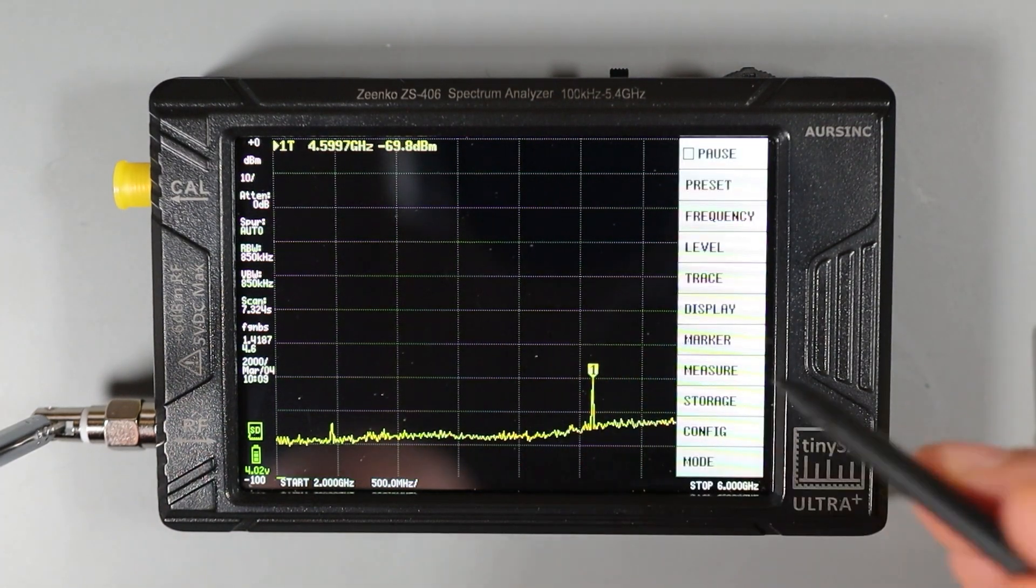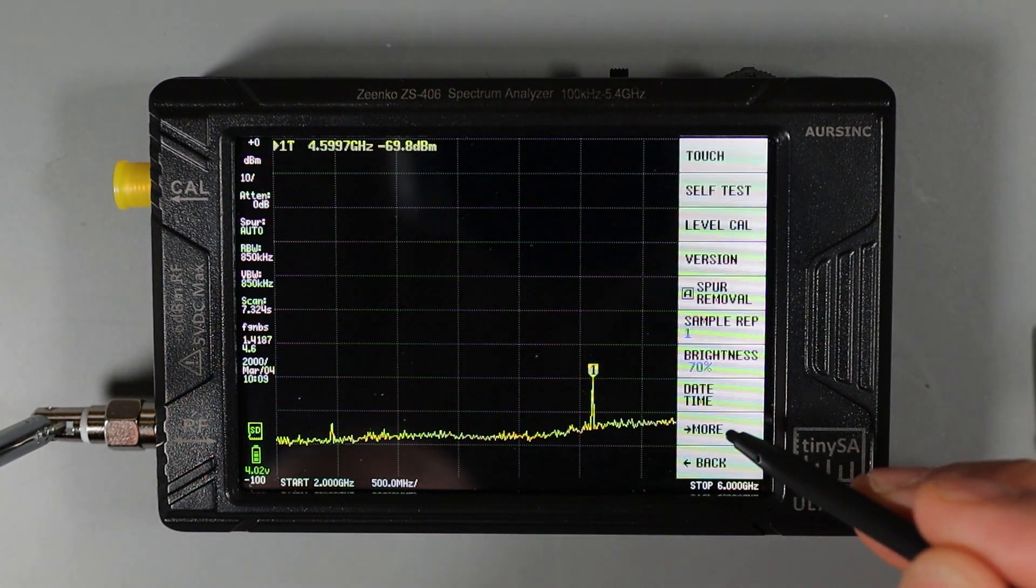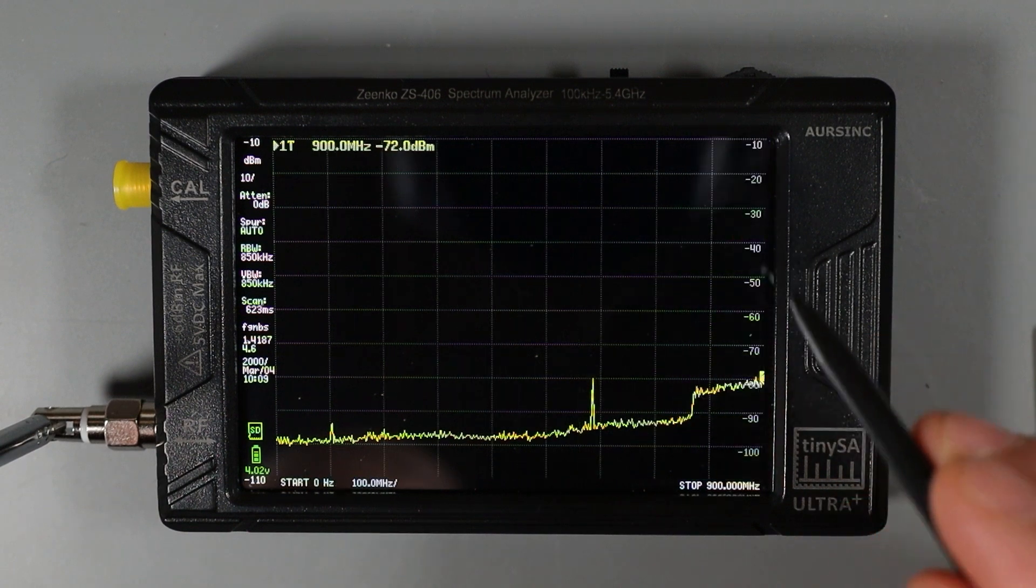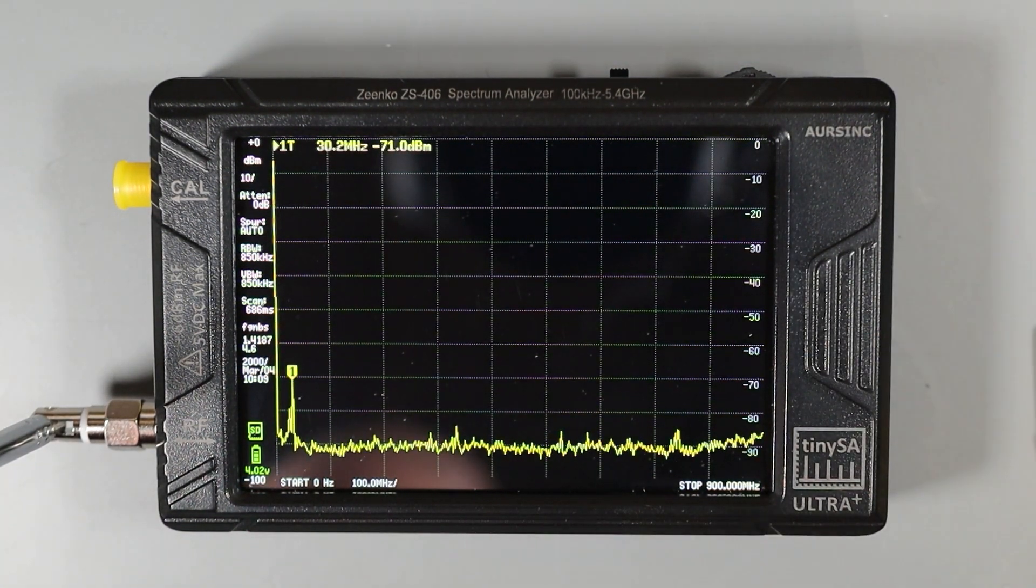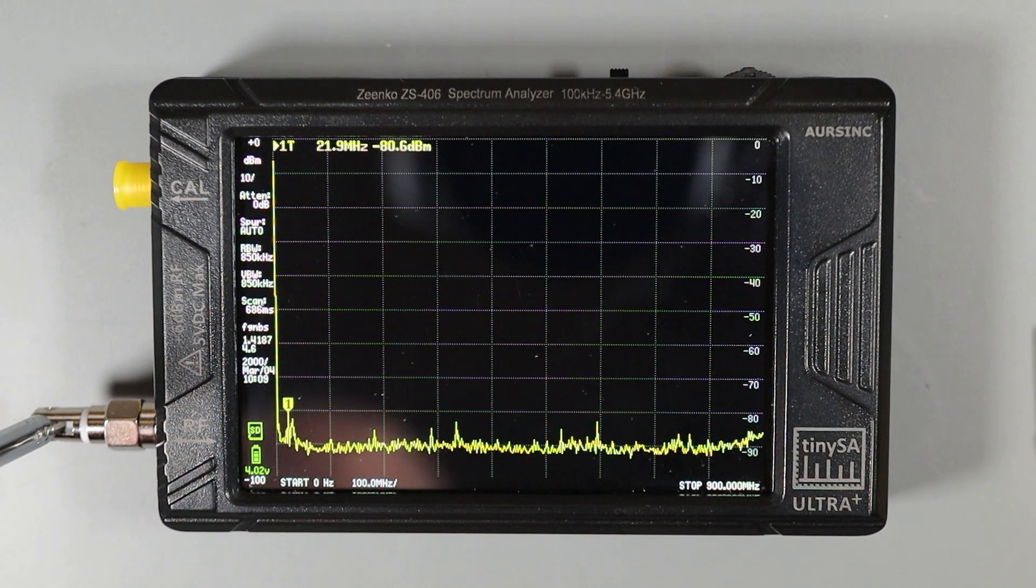To disable ultra mode, we just go back into the menu, choose config, choose more and uncheck ultra. And then the TinySA goes back and the top limit is now 900 megahertz like it was before.